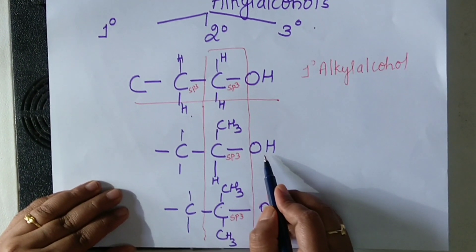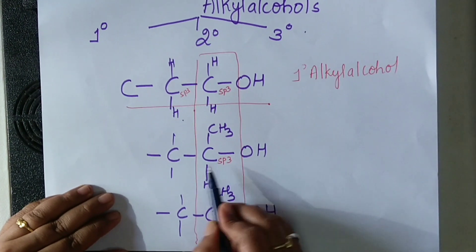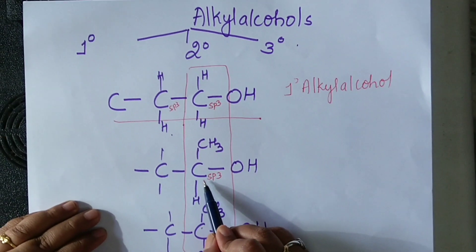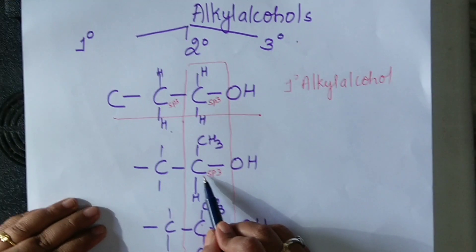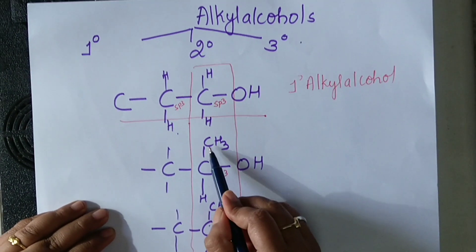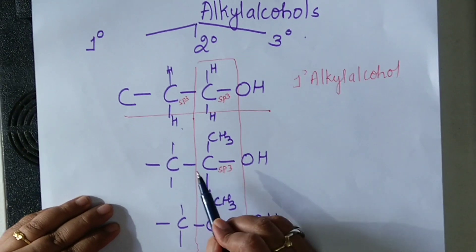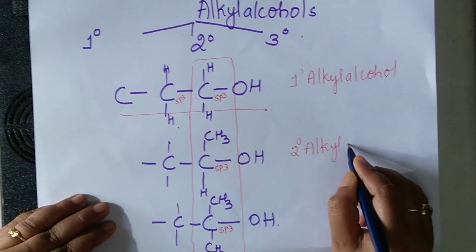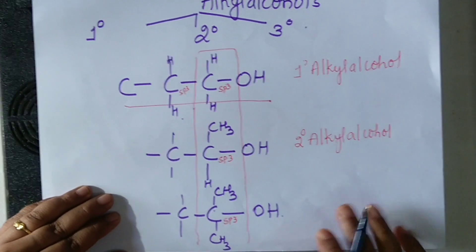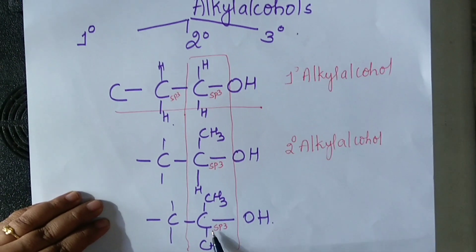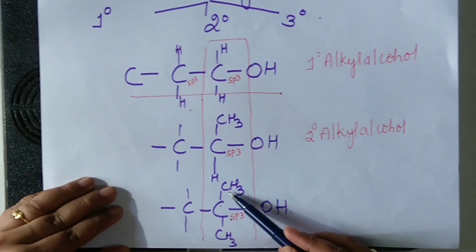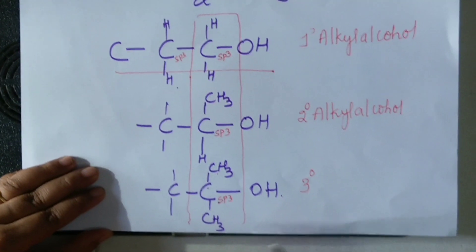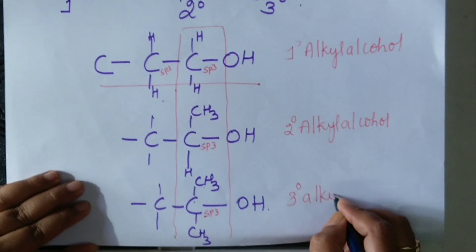Now look at this: OH is attached to an SP3 carbon atom which is next to SP3, so it is an alkyl alcohol. The carbon atom here is secondary because it is attached to two carbon atoms directly. Therefore, it is a secondary alkyl alcohol. Coming to the third example: the carbon atom here is attached to three carbon atoms directly — one, two, and three. Therefore, it is a tertiary alkyl alcohol.